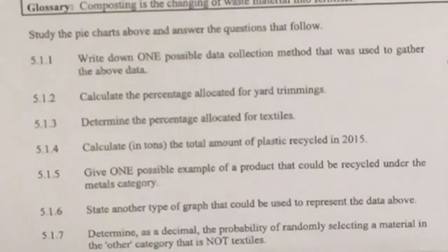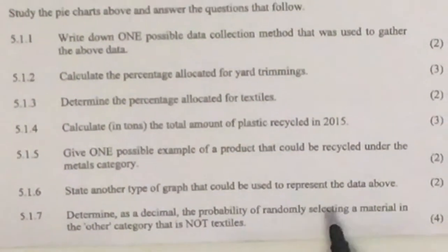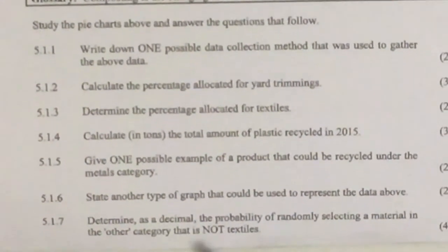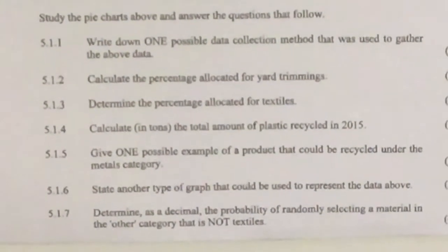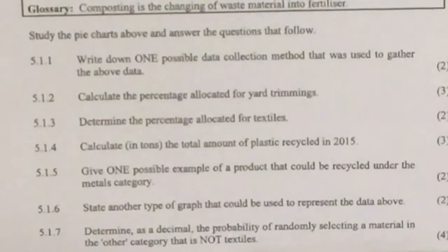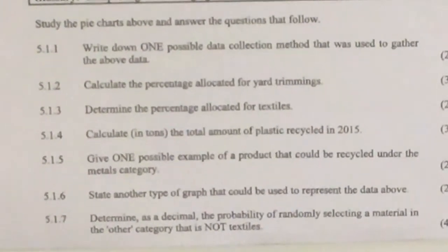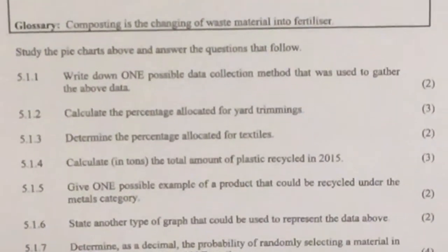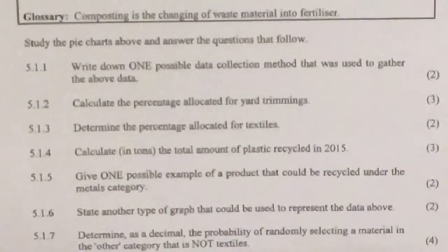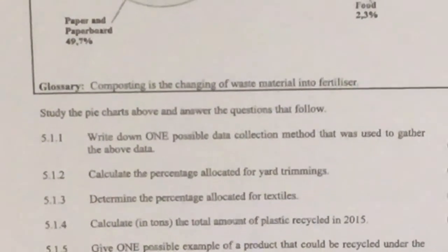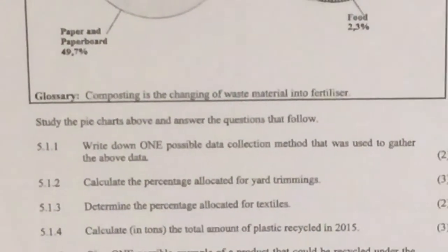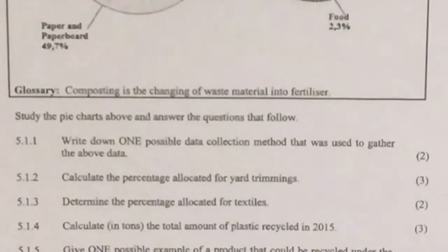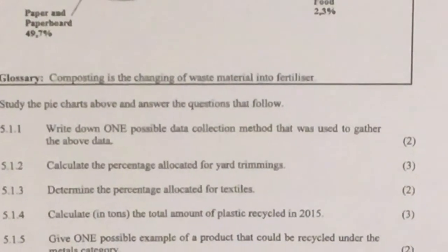Question 5.1.5: give one possible example of a product that could be recycled under the material metals category. This is general knowledge — when we recycle metal, what product could it be? You could have cans, pipes, car parts, old household appliances made of metal. They said one example, so any original metal product would work.